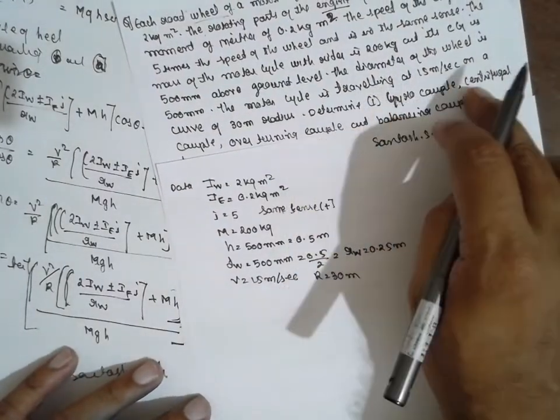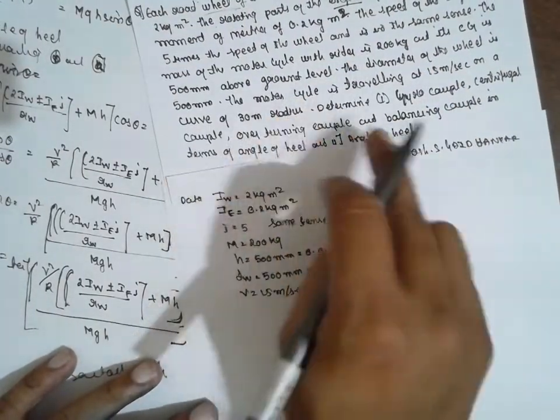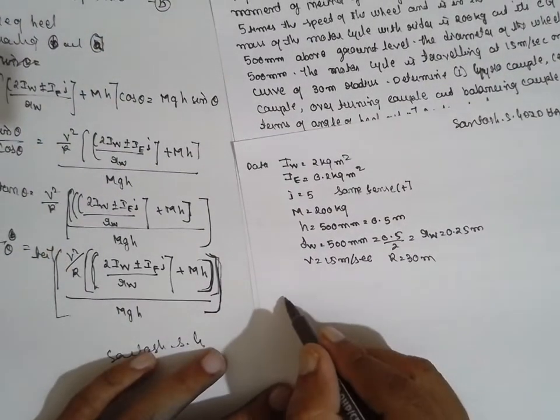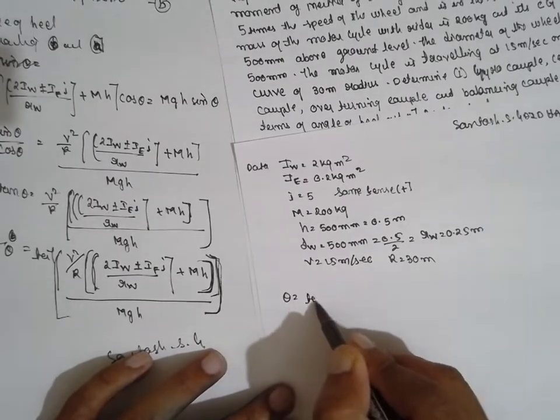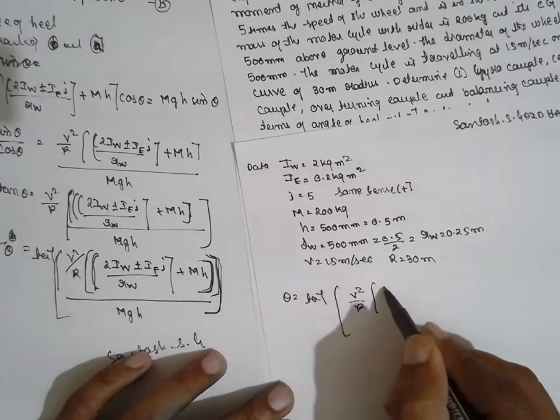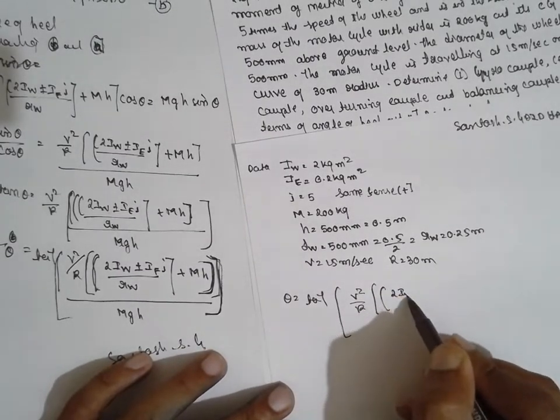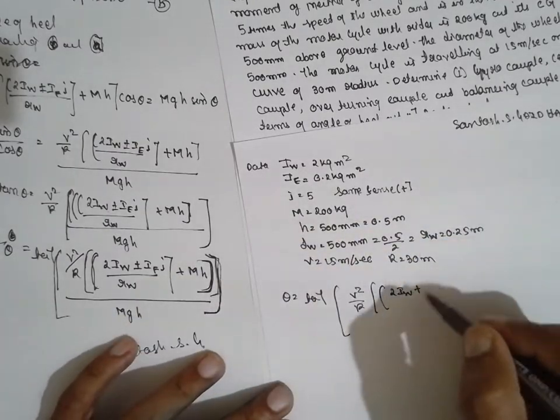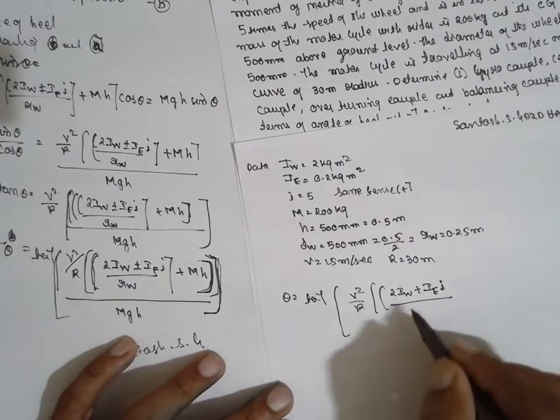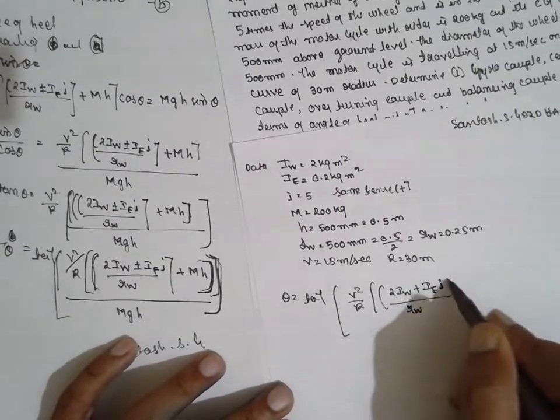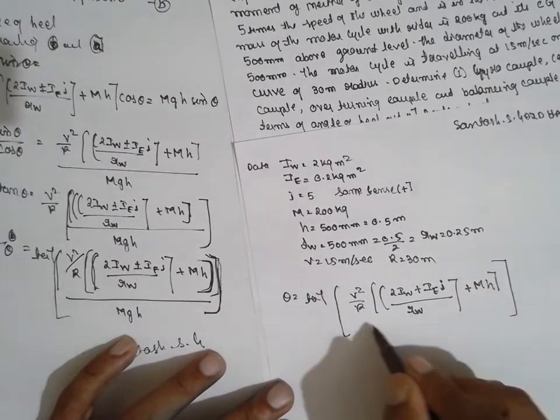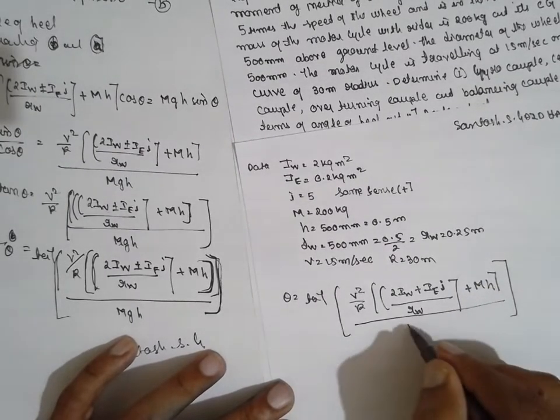The gyroscopic couple, centrifugal couple, overturning couple, then only you can find out the angle of heel. But by using direct formula, you can find out the angle of heel. The formula will be theta is equal to tan inverse V square by r, 2Iw plus, plus because it is in same sense, IE, small i, divided by rw, plus mh, mh divided by mh.